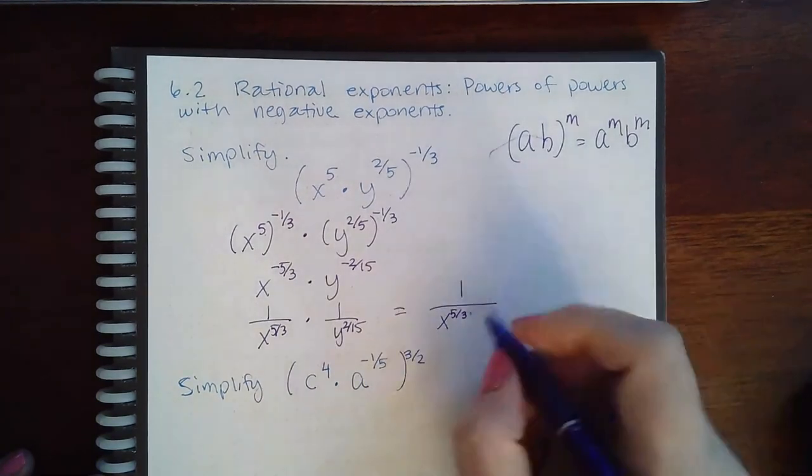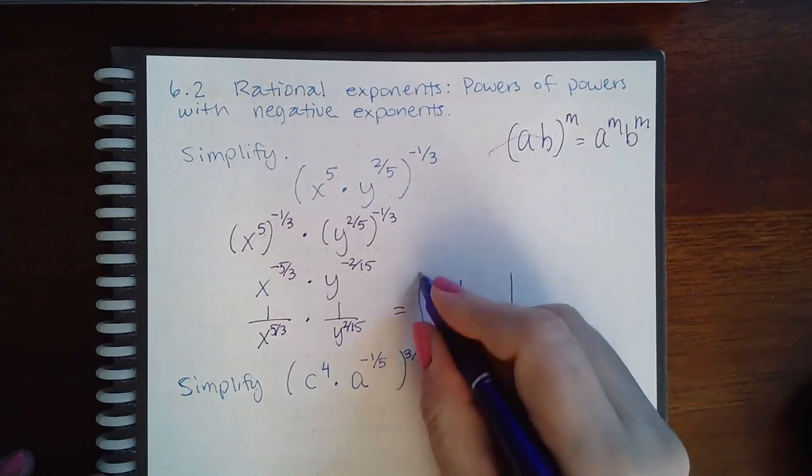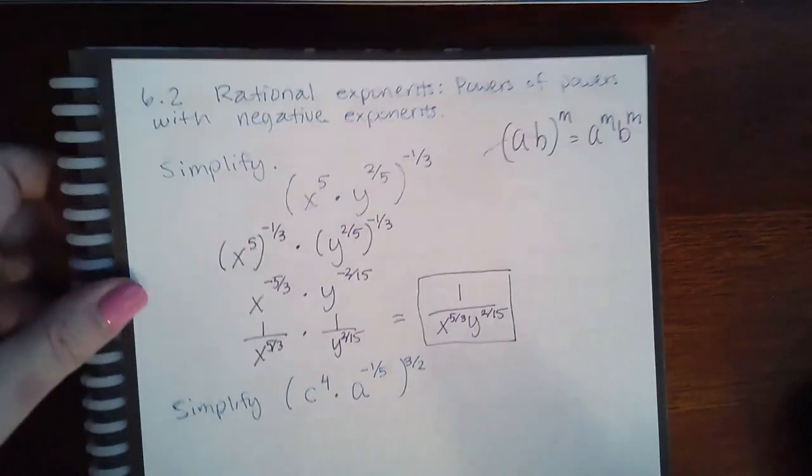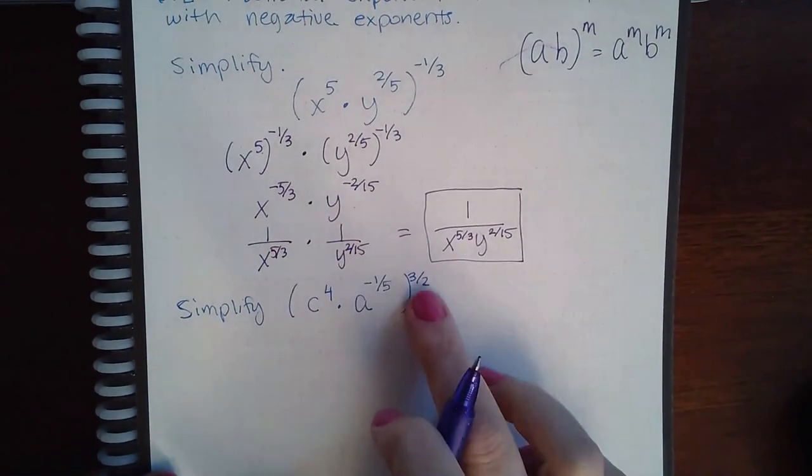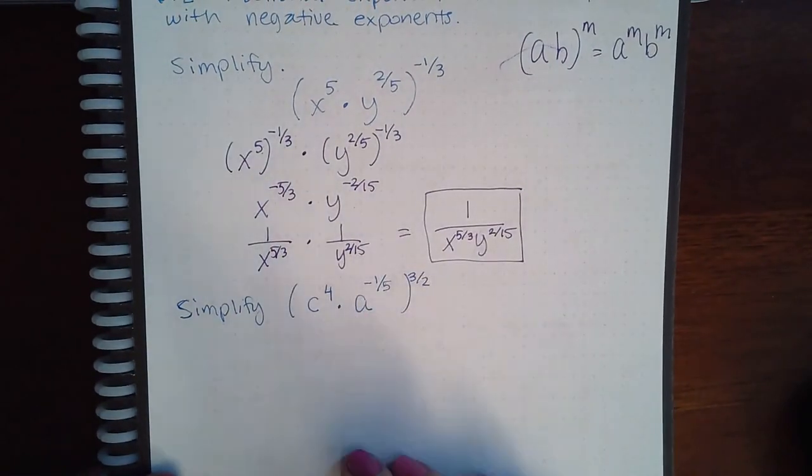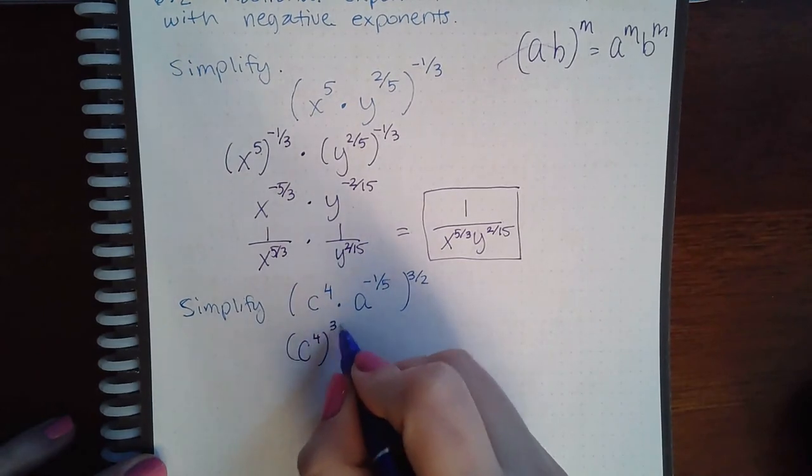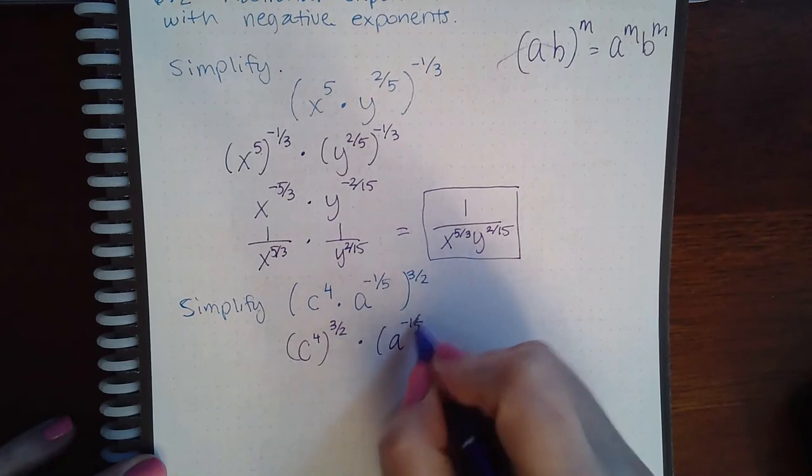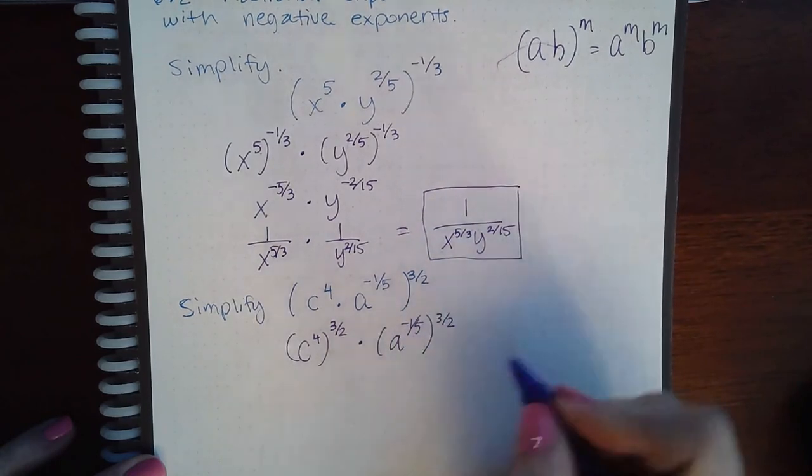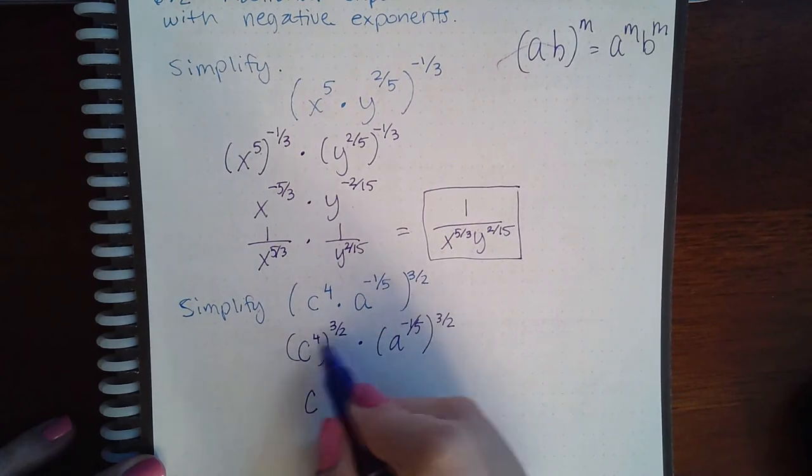Similarly we can do the same for this problem. Maybe this is positive now but something in here is negative. So first give each factor this exponent using that property, then use the power to a power rule that says you'll multiply these so you get six and then you get negative three over ten.